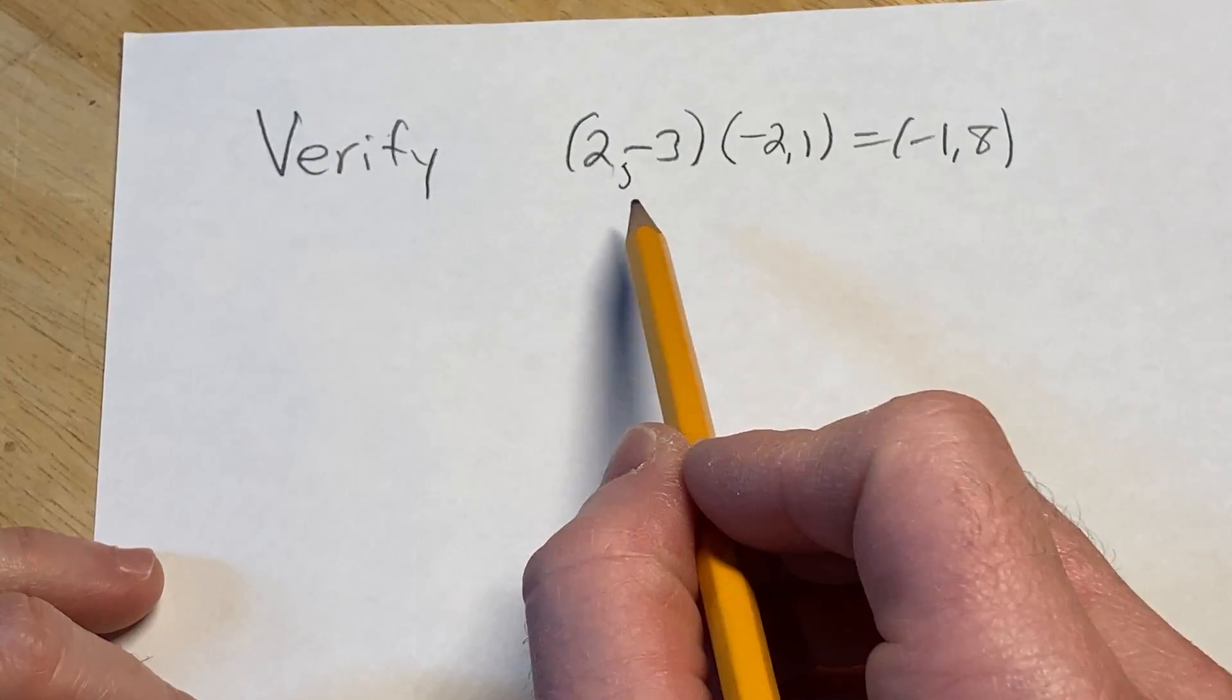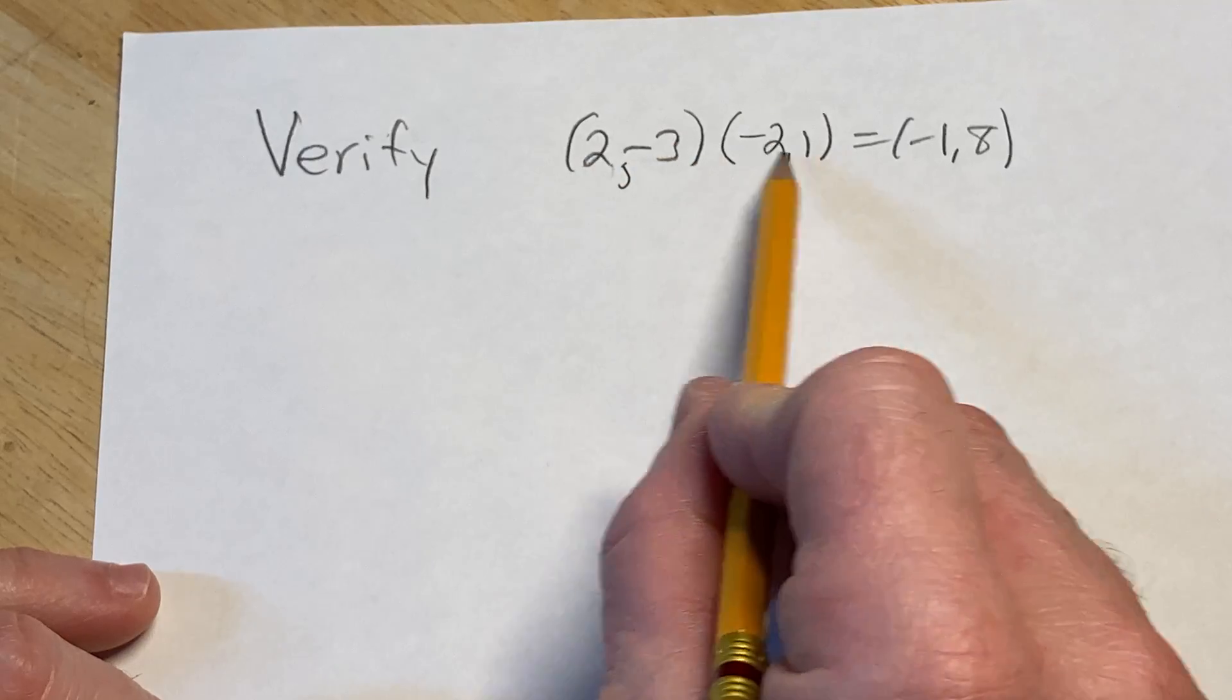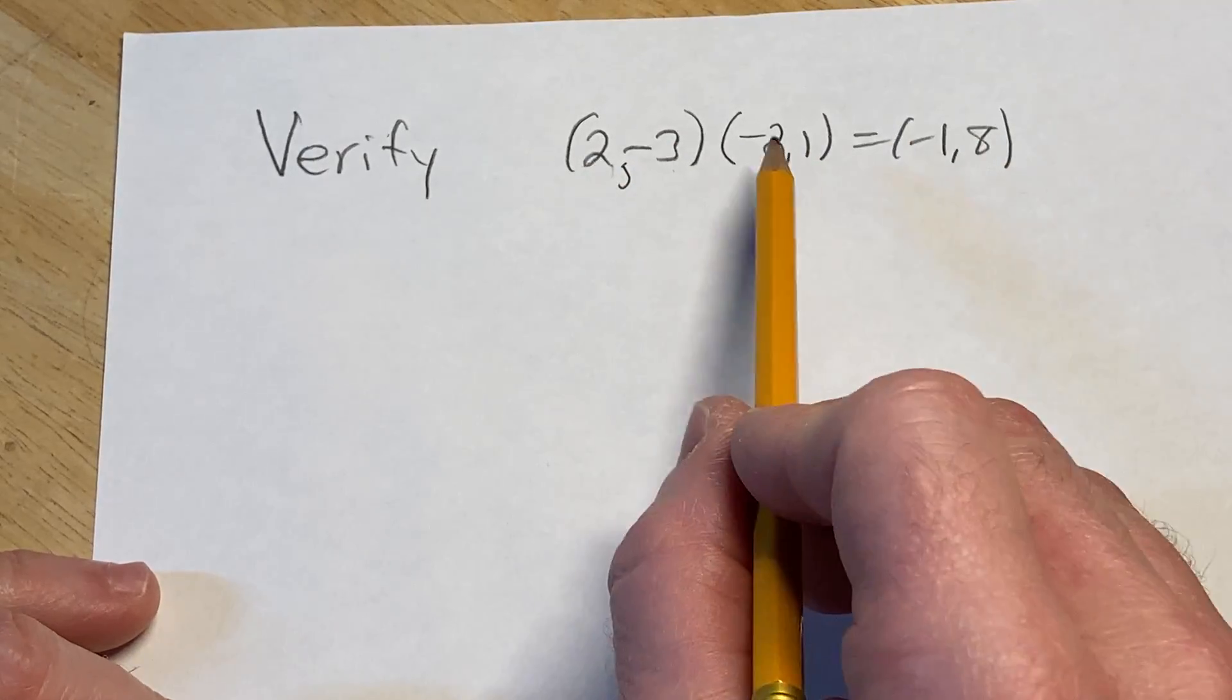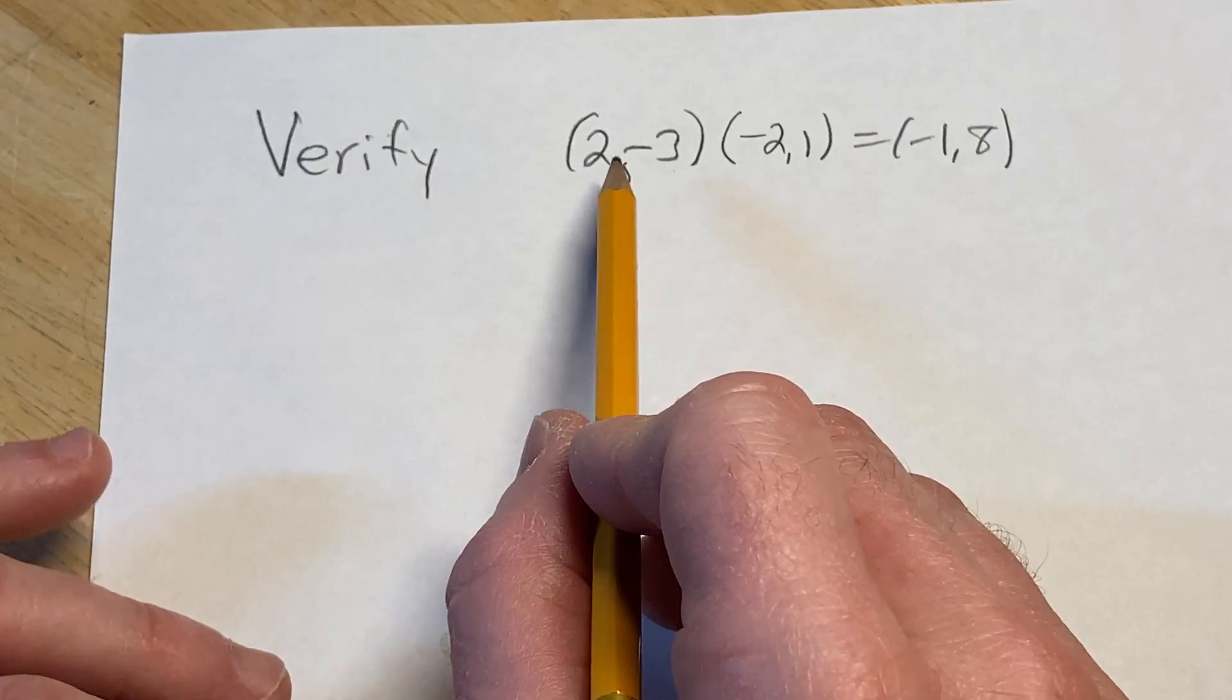Hi, in this video we're going to verify this equation. So what is happening here? Basically these are complex numbers and we're multiplying them. We're thinking of these as complex numbers written in ordered pair form.